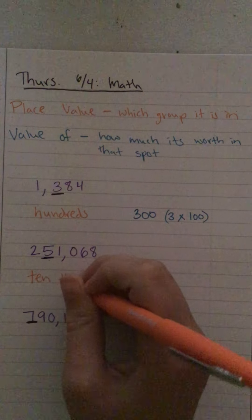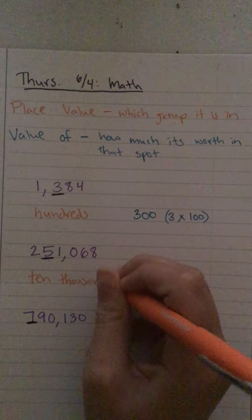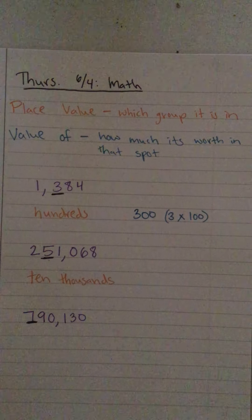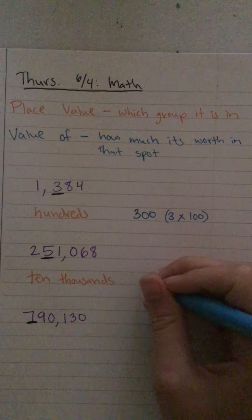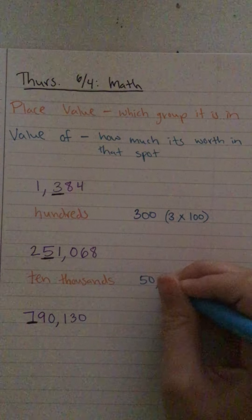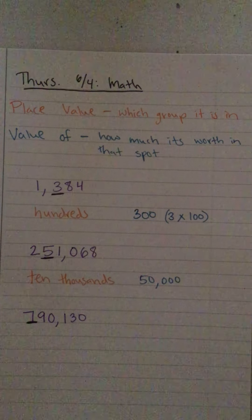That's its place value. But then the value of the five is fifty thousand. It's like saying five times ten thousand.